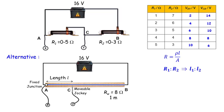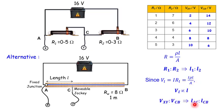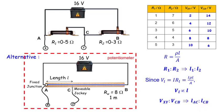If the same current flows through the whole length of the wire, then using V = IR, the potential difference across a length L is also proportional to L. Hence Vxy:Vcb = Lac:Lcb. This circuit is known as the potentiometer circuit.